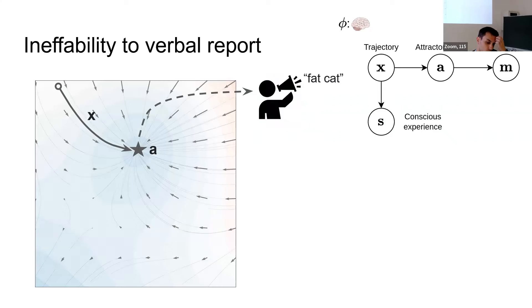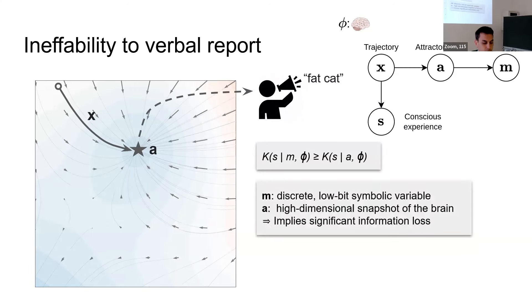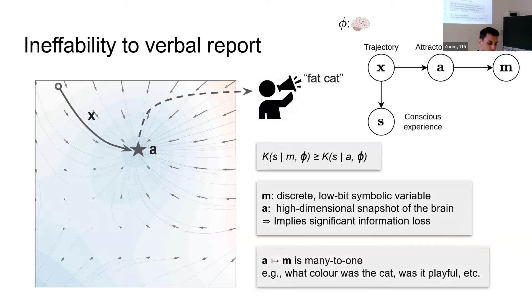Maybe an explanation for that is that only the attractor is getting written to long-term memory. And then when I try and recover it afterwards, everything about the trajectory, which trajectory that I come from, all that is lost. Now, moving on to verbal reports, again, if you believe something like global workspace theory, well, then the attractor bottlenecks what could actually go to language systems, what we can actually talk about. So there's this further downstream information loss. Now, the Kolmogorov complexity of an experience, given the message M, given some sentence that I might use to describe my experience, it's going to be much bigger than given the attractor because of similar kinds of arguments. One, M is this discrete, low-bit symbolic variable. There's not a lot of information in just language itself, at least compared to the attractor, which is this really high-dimensional snapshot of neural activity. So there has to be some information loss over here.